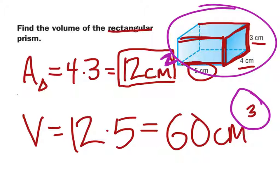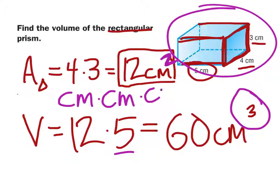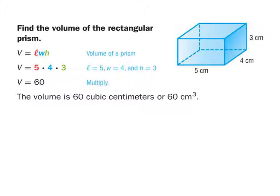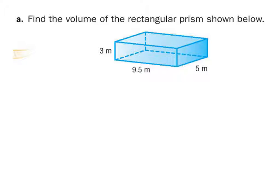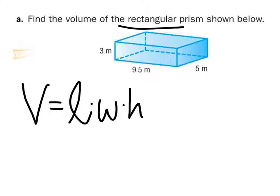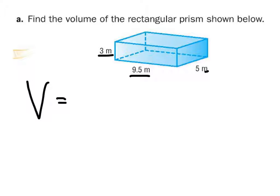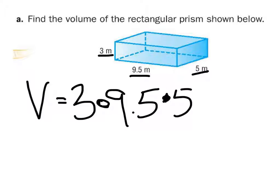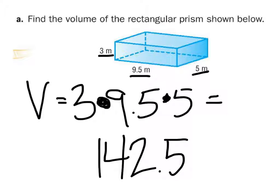That area should have been centimeters squared — centimeters times centimeters — and then we multiplied by that 5 centimeters as well, giving a third centimeters, which is why it's centimeters cubed. The volume of a rectangular prism is just length times width times height. So we take the three numbers given — 3, 9.5, and 5 — and multiply them: 3 times 9.5 times 5 gives us 142.5 meters cubed.